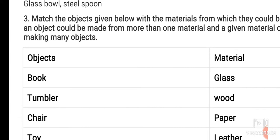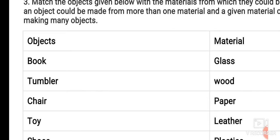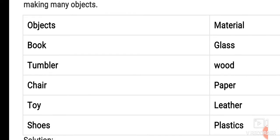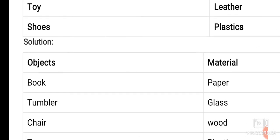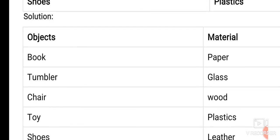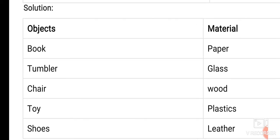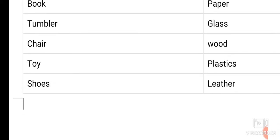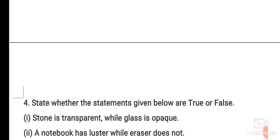In the third question, here is a table. On one side are objects and on the other side are materials, and you have to match them. For example, book is made up of which material? You won't match with lines drawn - you have to make another table in which you correctly match like this: book is made up of paper, tumbler is made up of glass, chair is made of wood, toys are made of plastic, and shoes are made up of leather.